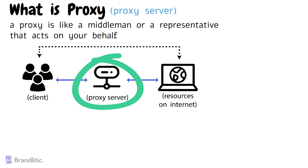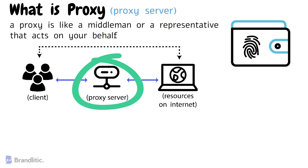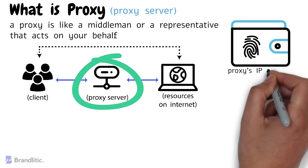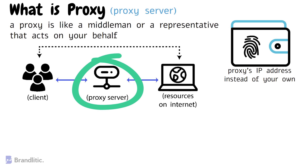A proxy server sits between your device — like a computer or a smartphone — and the website you want to visit. When you send a request to access a website, it goes to the proxy server first. The proxy server then sends the request to the website on your behalf, receives the response, and sends it back to you. Proxies can serve different purposes as well. One common use is to enhance privacy and security. When you use a proxy, the website you visit sees the proxy's IP address instead of your own. This helps to hide your identity and location, making it more difficult for others to track your online activities.